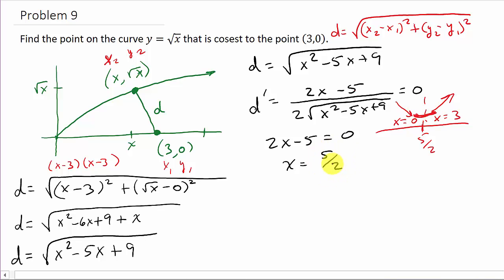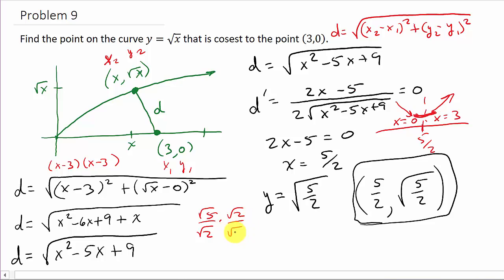This is our x coordinate, 5 halves. So what's our y coordinate? y equals the square root of x, so that's the square root of 5 halves. This would be your solution here: (5 halves, square root of 5 halves). If you wanted to rationalize the denominator, we would split that up into square root of 5 over square root of 2, multiply by square root of 2 over square root of 2, and that's square root of 10 over 2. So either one, whatever your teacher prefers.